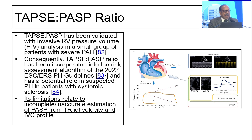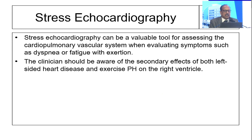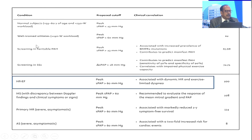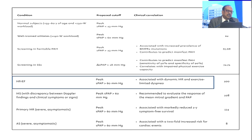A couple of people always ask me: do we do stress echocardiography in right-sided heart disease? This is one factor which gives great value in assisting cardiopulmonary vascular assessment when evaluating symptoms of dyspnea or fatigue on exertion. The clinician should be aware of the secondary effect of both left-sided heart disease as well as exercise hypertension on the right ventricle. When a patient presents to our lab with exertional angina or exercise dyspnea, we always look at right-sided pressures and right-sided function, and most of the time we are able to give an answer — this illness is coming from the right side.